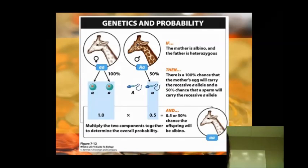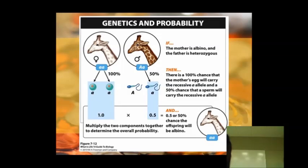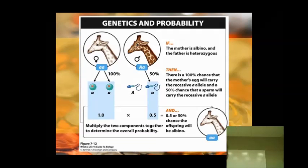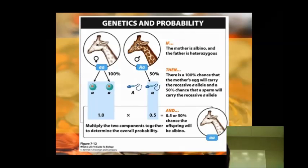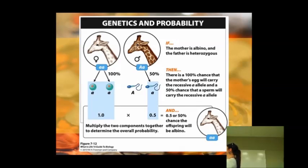Here we've got our mom. She is homozygous recessive, little a, little a. So her eggs are all going to have little a's in them — that's the only thing that can possibly come from mom. If you've got a dad who is big A, little a, then his sperm could have a big A or a little a. That's a 50% chance of big A or little a. So if you multiply those together, we have that 50% chance of the offspring having both a little a from mom and a little a from dad.